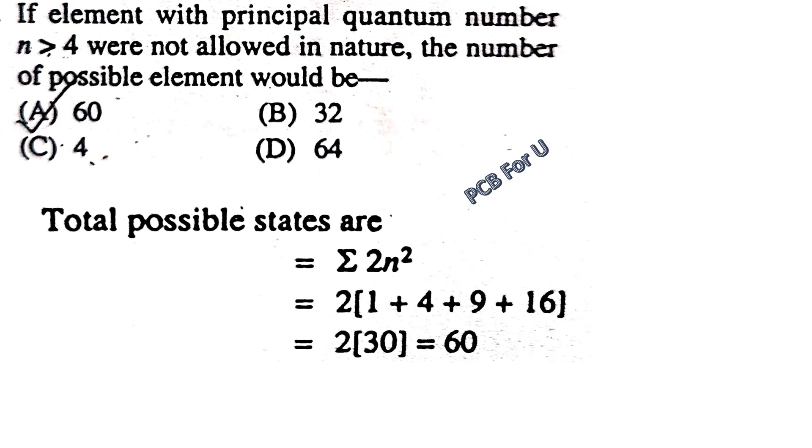If element with principal quantum number n is greater than 4 were not allowed in nature, the number of possible elements would be equal to the solution 2n².